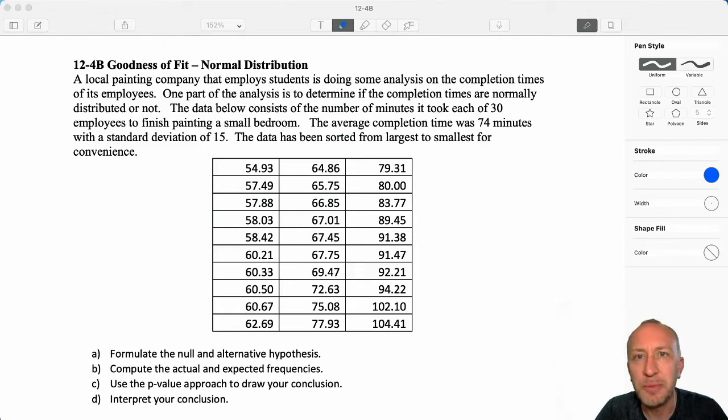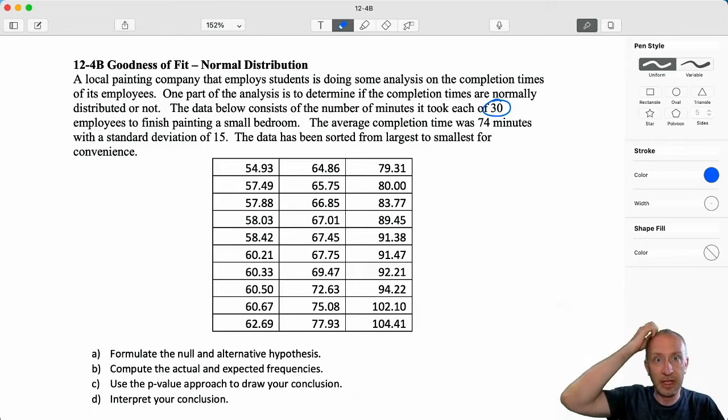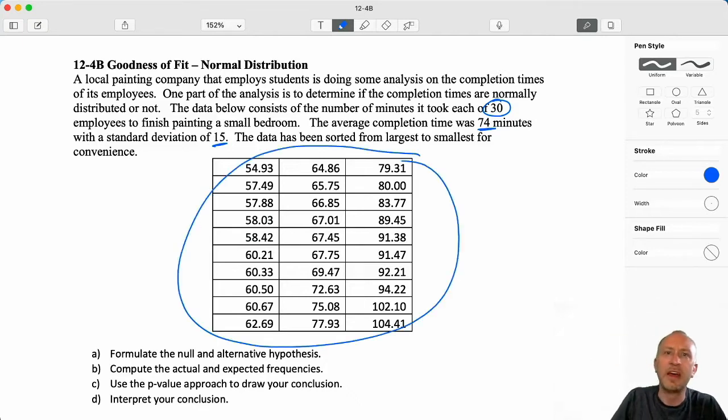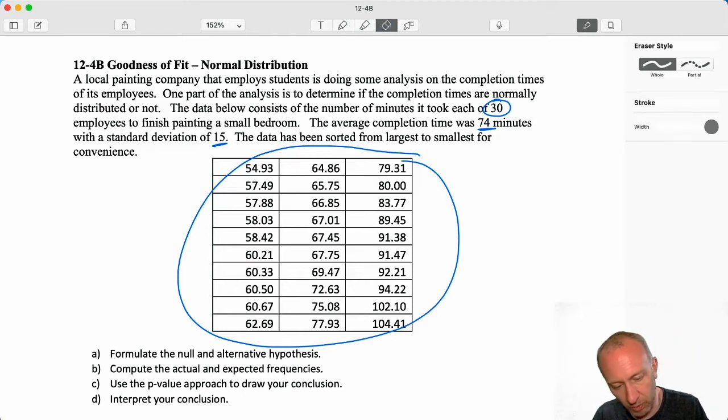A local painting company that employs students is doing some analysis on completion times of its employees. One part of the analysis is to determine if the completion times are normally distributed or not. The data below consists of the number of minutes it took each of 30 employees to finish painting a small bedroom. I'm circling 30 because that's going to be a useful number. The average completion time was 74 minutes with a standard deviation of 15. The data has been sorted from largest to smallest for convenience, and it makes no difference how you sort the data as long as it's sorted. It does make things somewhat easier.